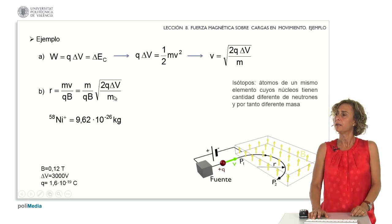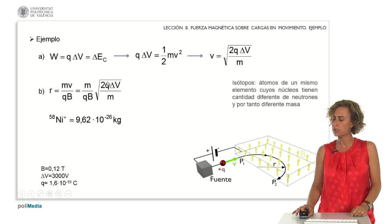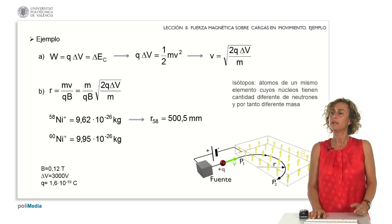In the case of nickel 58, where the mass was 9.62 times 10 raised to minus 26 kilograms, substituting this value into the expression yielded a radius of 500.5 millimeters. For nickel 60, with a mass 9.95 times 10 raised to minus 26 kilograms, the resulting radius is 509.5 millimeters.